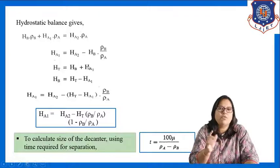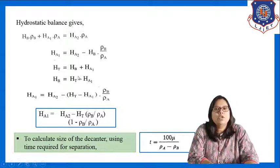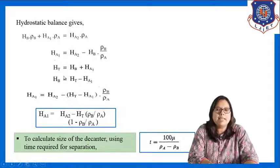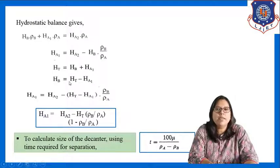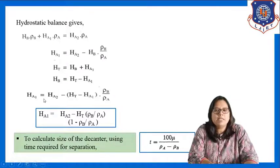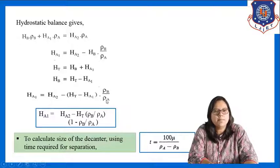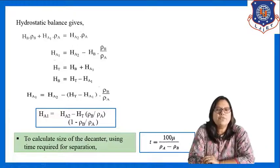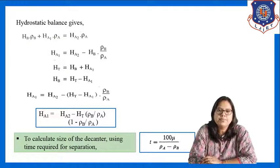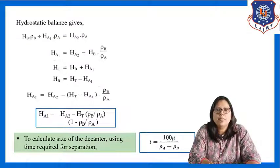The total height HT = HB + HA1, so HB = HT − HA1. Substituting this value of HB into the equation: HA1 = HA2 − (HT − HA1)·(rho_B / rho_A). Simplifying this equation for HA1, we get: HA1 = [HA2 − HT·(rho_B / rho_A)] / [1 − (rho_B / rho_A)]. By using this equation, we can calculate the value of HA1 or HA2 when the other heights are given.